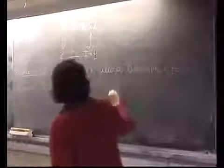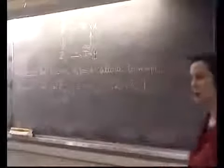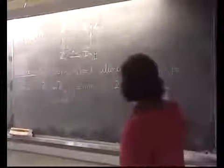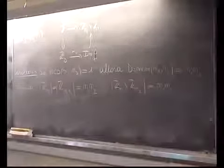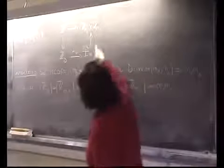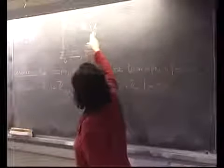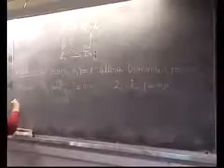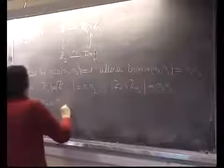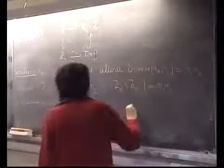Quanti elementi ha il codominio? Il prodotto cartesiano tra un insieme con n1 elementi e un insieme con n2 elementi ha n1 per n2 elementi. Di conseguenza, l'immagine ha tanti elementi quanti Zd: va dentro il codominio, sono insiemi finiti con la stessa cardinalità.